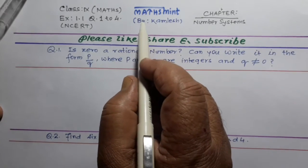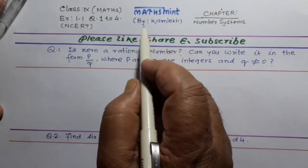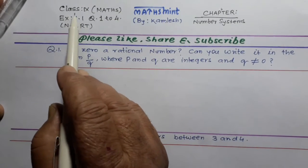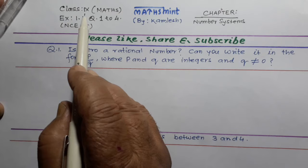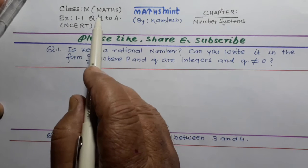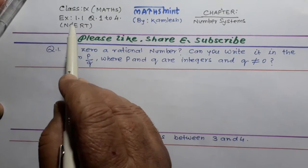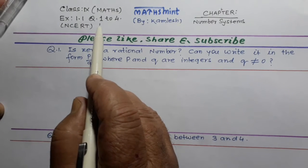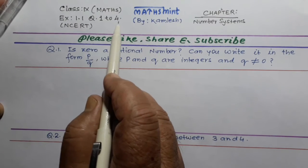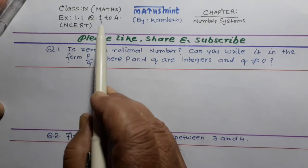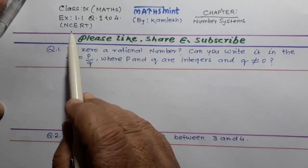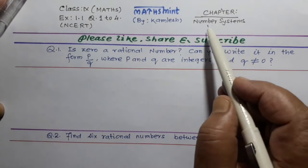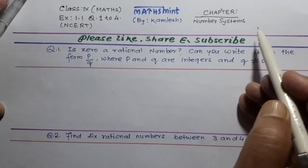Hello students, welcome to channel Maths Minute by Kamles. Today I will solve for class 9th Maths exercise 1.1 questions 1 to 4 — all questions of exercise 1.1 from the NCERT book, chapter Number Systems.